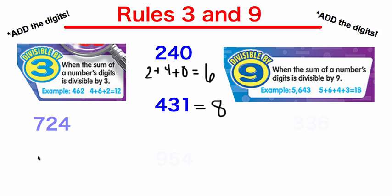Let's try another one: 724. Go ahead and add those digits in your head and think — can 3 or 9 go into the addition of those digits? 7 plus 2 is 9, plus 4 is 13. This number is not divisible by 3 and it's not divisible by 9 because 3 and 9 cannot evenly go into 13.